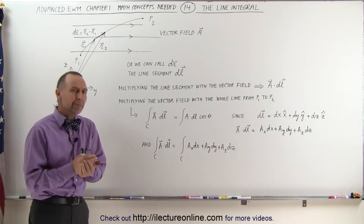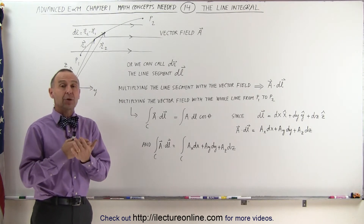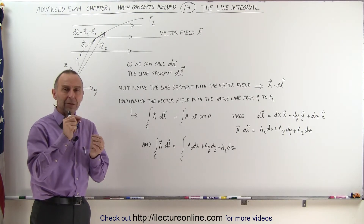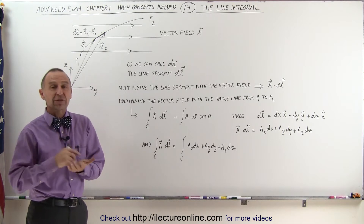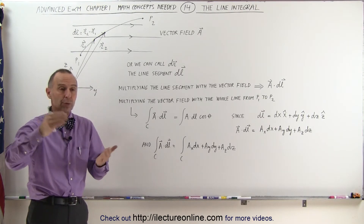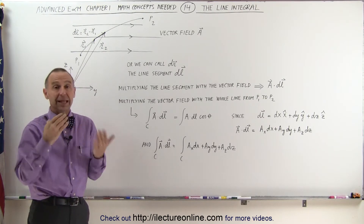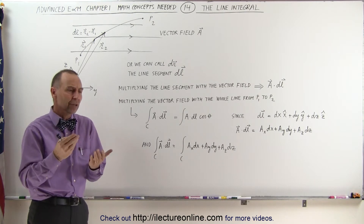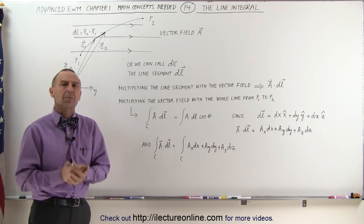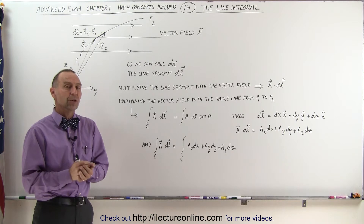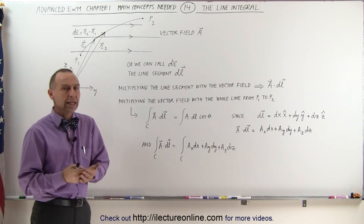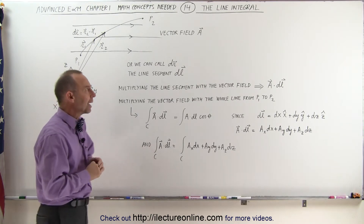In electricity and magnetism we often have to multiply a line with a vector field. For example, as we travel from one point to another point through a magnetic field or through an electric field, we need to be able to do that multiplication, and that's in essence what we call a line integral in electricity and magnetism.